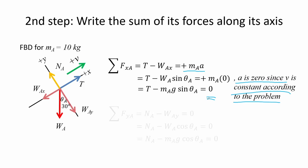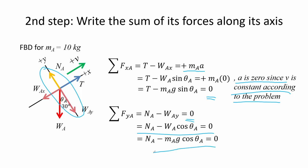For the sum of forces along the Y axis, it is the sum of the normal force minus weight component along the Y axis equals to 0, since there is no movement along the Y axis. This is further expanded into the normal force A minus the mass A times G times cosine of the angle theta A.